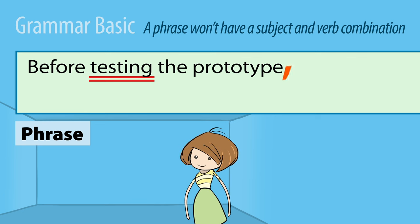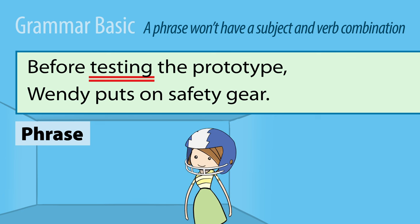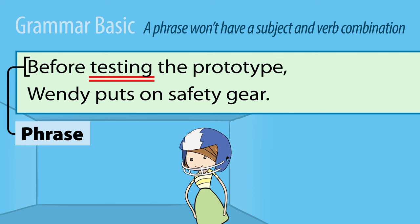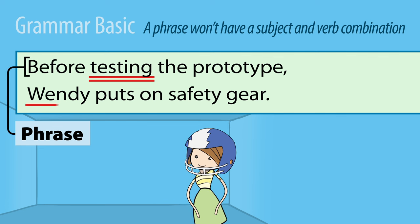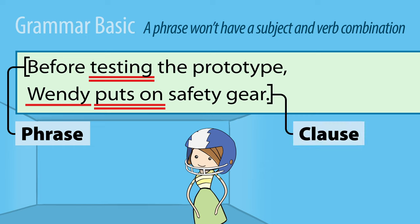Before testing the prototype, Wendy puts on safety gear. The first word group has no subject, just a verb — so it's a phrase. The second one has both a subject and a verb. It's a clause.